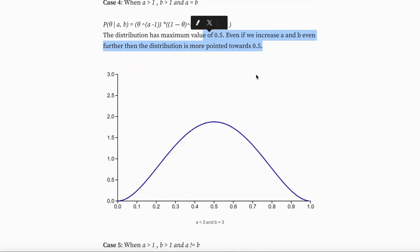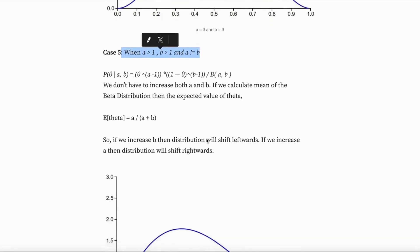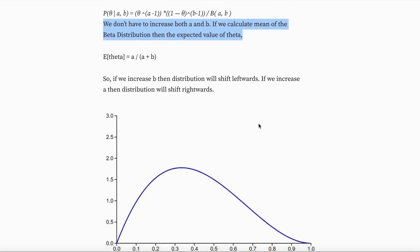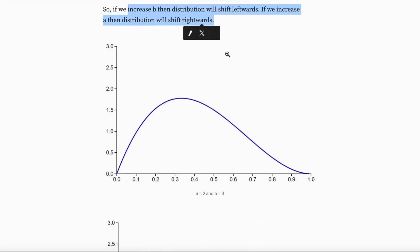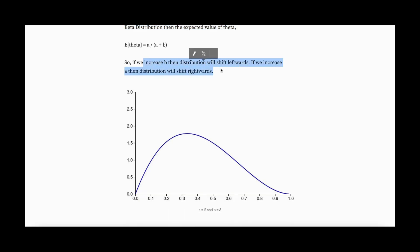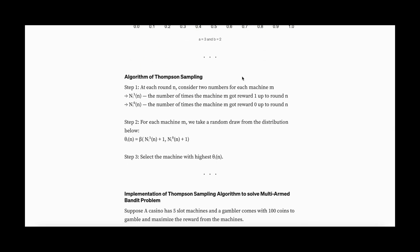And this is an example when alpha is greater than 1 and beta is greater than 1, where alpha is equal to beta. The distribution has a peak at 0.5. As you increase alpha and beta further, the distribution becomes more concentrated. As we increase alpha, then the distribution shifts rightward. As we increase beta, the distribution shifts leftward.